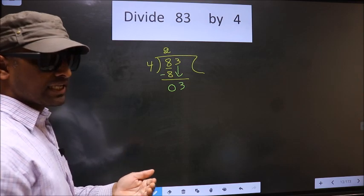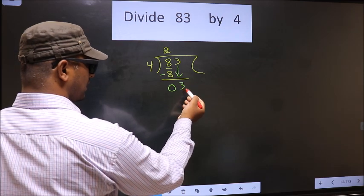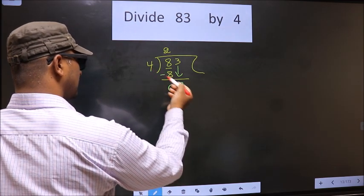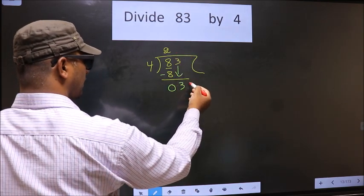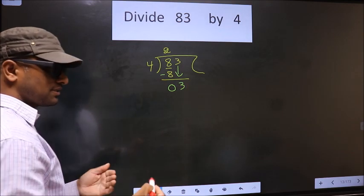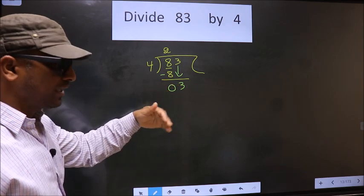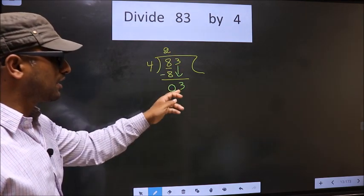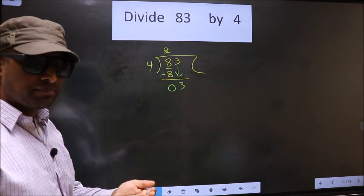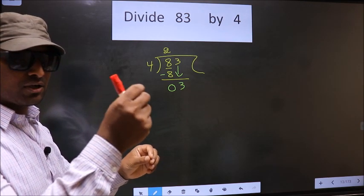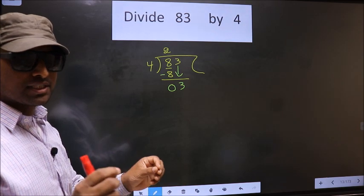Now this is where the mistake happens. Here we have 3 and here 4. 3 is smaller than 4. So what many do is they put a dot and take 0 here which is wrong. Just now you brought the number down and in the same step you want to put a dot and write 0 here which is wrong. Both at the same step you are not supposed to do.